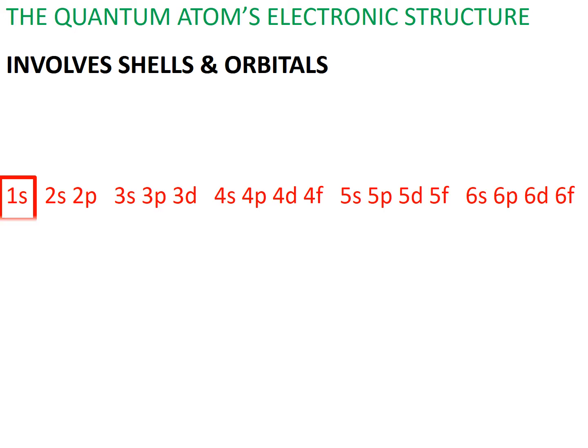The second shell contains two orbitals, a 2s and 2p. The third shell contains three orbitals, a 3s, 3p and 3d. The fourth shell contains four orbitals, a 4s, 4p, 4d and 4f.